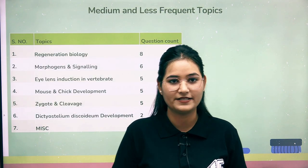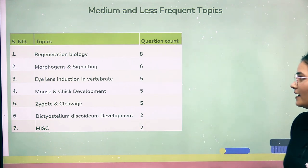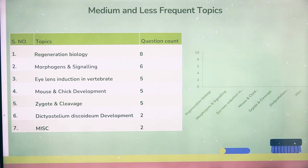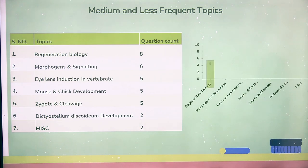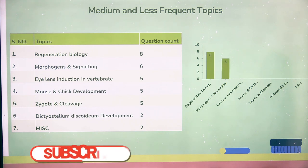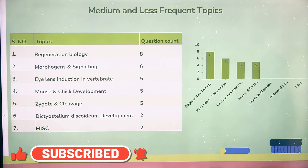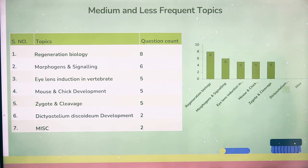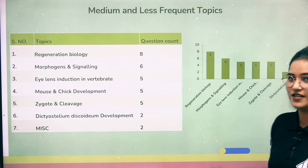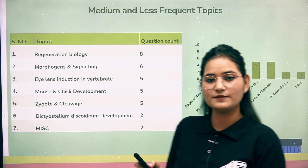In the medium and less frequent category, there are seven topics in total. From these seven topics, the question counts are: Regeneration Biology — 8 questions, Morphogen and Signaling — 6 questions, Eye-Lens Development — 5 questions, Mouse and Chick Development — 5 questions, Zygote Cleavage — 5 questions, Dictyostelium — 2 questions, and Miscellaneous Concepts — 2 questions. Miscellaneous concept is a category where many questions span more than two topics, so they are grouped together.